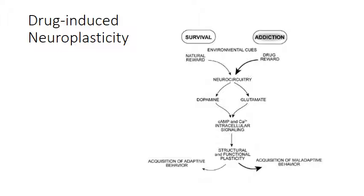Drug intake can be compared to natural rewards — survival and addiction may appear similar neurologically. However, the amount of dopamine secreted in response to an artificial trigger such as a substance is much more powerful — many times higher than natural rewards. This leads to acquisition of maladaptive behaviors where people become focused on obtaining the drug, as it produced the biggest impact on their dopamine reward system. The circuits get strengthened and the cycle continues.